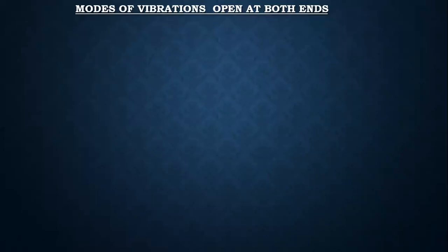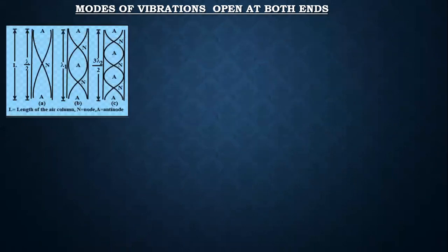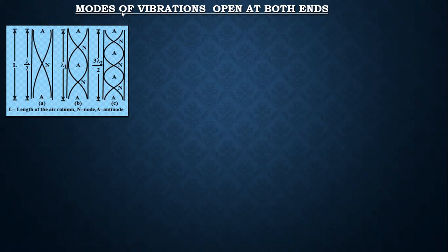In today's lecture we study modes of vibration of air column in a pipe open at both ends. These are the first three modes of vibration. In the basic mode, at the open end an anti-node is formed, so in the first mode we get two anti-nodes and one node, and the distance is lambda by two.